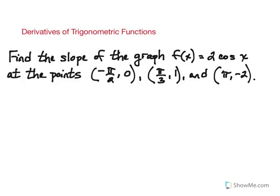Let's take a look at an example of using derivatives to find the slope of a trigonometric curve at specified points. Here we have the curve f(x) = 2cos(x), and we have three points on that curve given to us, and we are trying to find the slope at each of those points.